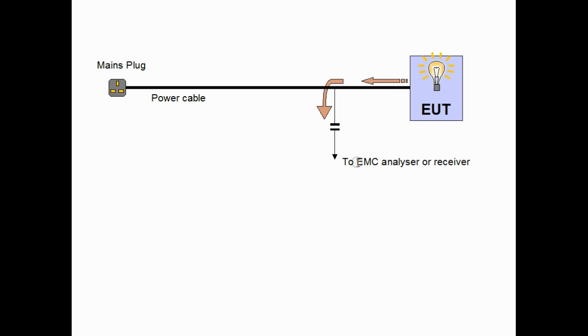The easiest way to do this is to capacitively couple to the cable so that we can extract the interfering signal and send that to our analyzer. So basically we're measuring voltage. This is simple enough to do.